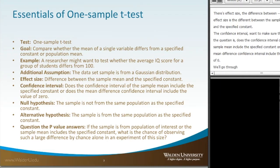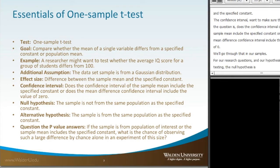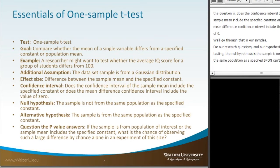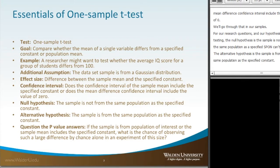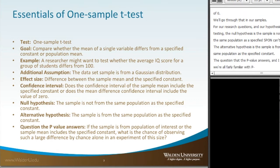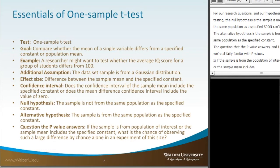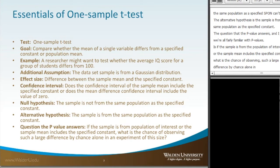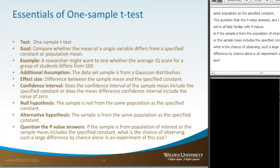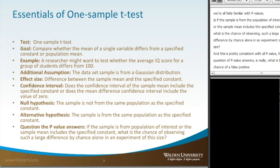For research questions and hypothesis testing, the null hypothesis is that the sample is not from the same population as the specified constant. The alternative hypothesis is that the sample is from the same population as the specified constant. The question the p-value answers is: if the sample is from the population of interest, or the sample mean includes the specified constant, what is the chance of observing such a large difference by chance alone in an experiment of this size? Essentially, the p-value answers what is the chance of a false positive, or a Type 1 error.